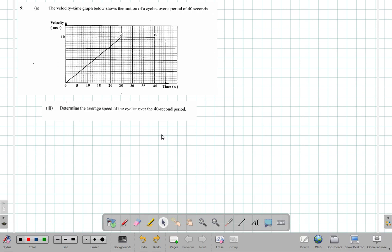Let's take another look at question 9b3. It says we must determine the average speed of the cyclist over the 40-second period. So let's use our knowledge of the equations of motion to see how we can solve this again and see if we get a similar answer.